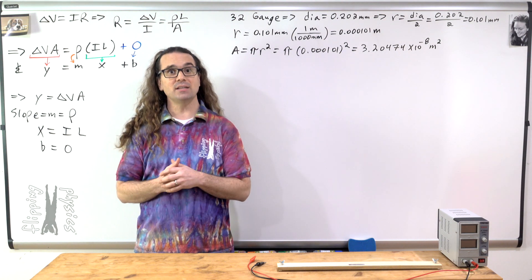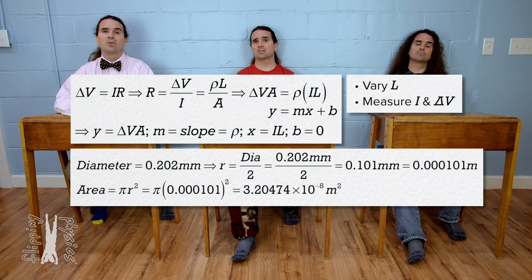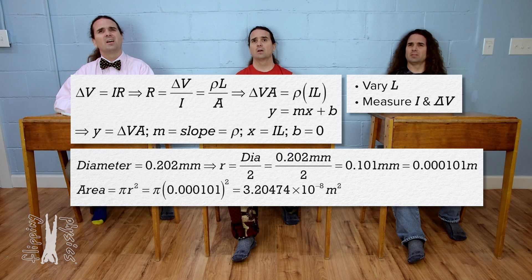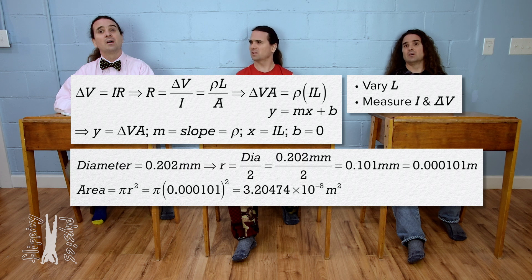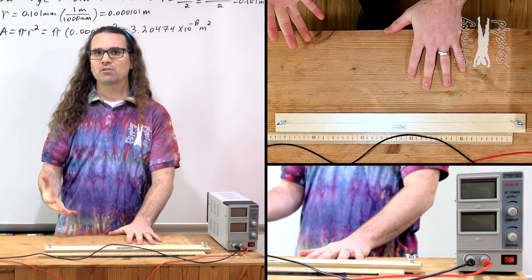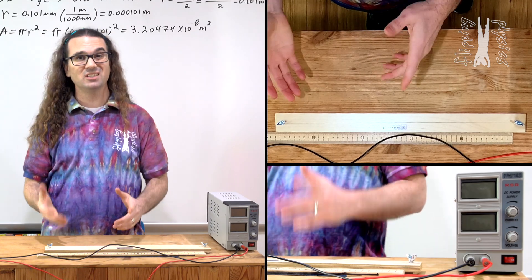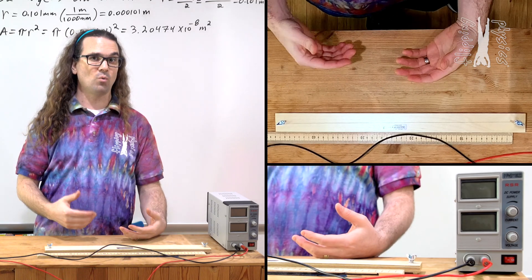And now we can collect data. Remember to start with the longest length of wire. Why? Because we cannot make the wire longer after we cut it to its shortest length. Actually, we do not need to cut the nichrome wire. When we say the length of the nichrome wire, what we mean is the effective length — the distance between the two alligator clips on the wire.